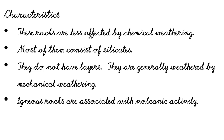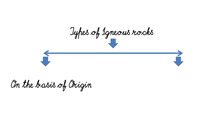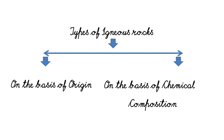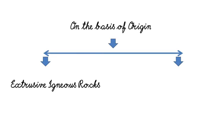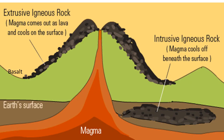Igneous rocks are associated with volcanic activity and are mostly found in volcanic regions. Now let's learn the types of igneous rocks. Igneous rocks are classified on the basis of origin and chemical composition. On the basis of origin, they are classified into extrusive igneous rocks and intrusive igneous rocks. Extrusive igneous rocks are formed by the cooling of molten magma on the Earth's surface — these are also called volcanic rocks. The magma brought to the surface through volcanic eruptions solidifies to form smooth, crystalline and fine-grained rocks.